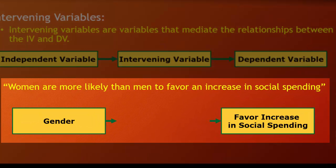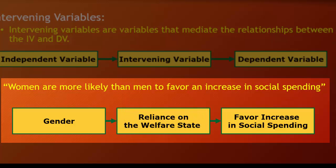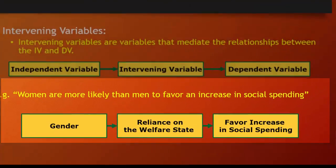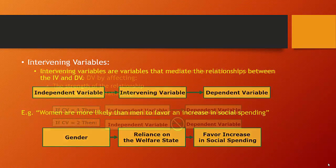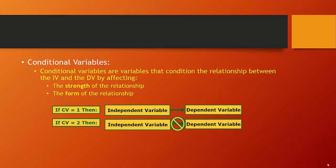So let's take a look at this example. Women are more likely to favor an increase in social spending than are men. Now we have an independent variable of gender and a dependent variable of social spending. And you have to ask yourself why it is that women would favor an increase in social spending more so than men. And possibly you might come up with some sort of solution that would suggest that women are more likely to be reliant on the welfare state. They're more likely to visit physicians. They're more likely to be the head of single parent households, etc.